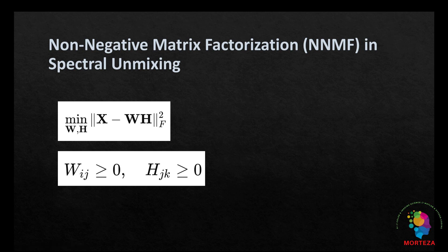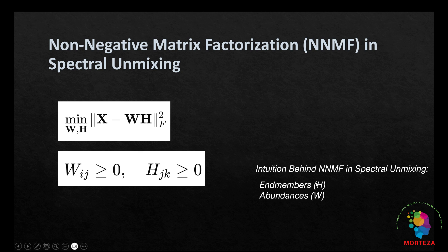The intuition behind NNMF in spectral unmixing is twofold. First endmembers or matrix H and second abundances or matrix W. Let's first talk about endmembers. These are the pure spectra of the materials in the scene. Each row of H represents a distinct material like vegetation, soil, water, etc.